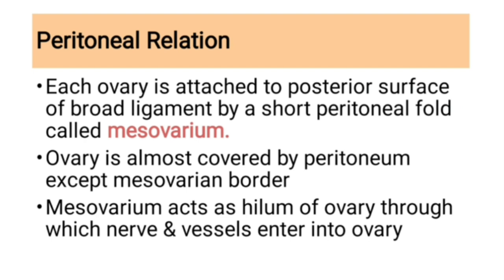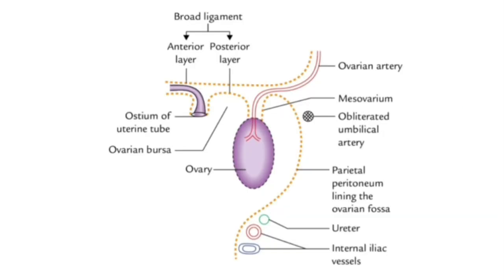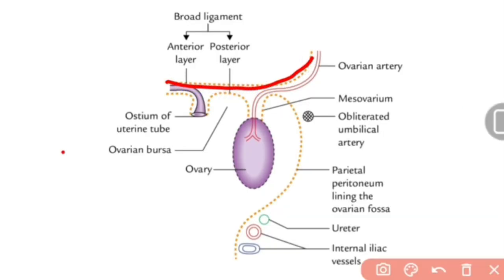Regarding peritoneal relations: each ovary is attached to the posterior surface of the broad ligament by a short peritoneal fold called the meso-ovarium. The ovary is almost entirely covered by peritoneum except at the mesovarian border. The meso-ovarium acts as a hilum — the opening through which nerves and vessels enter the ovary.